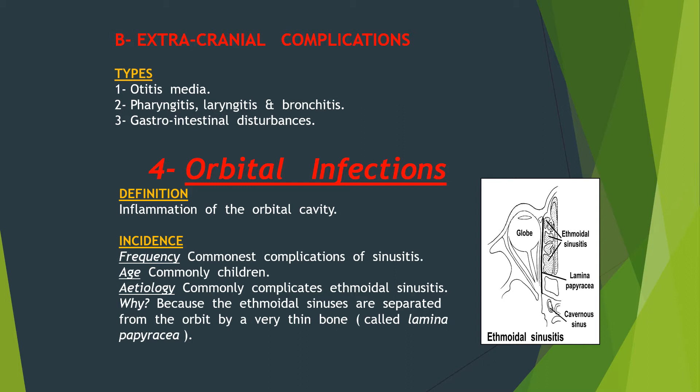Orbital infections are inflammation of the orbital cavity and commonly happen in children. Why does it commonly complicate ethmoidal sinusitis? Because the ethmoidal sinuses are separated from the orbit by a very thin bone called the lamina papyracea.